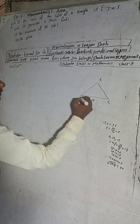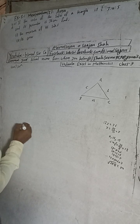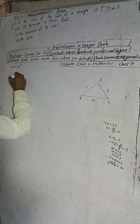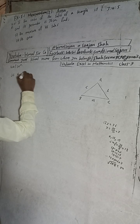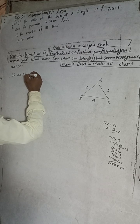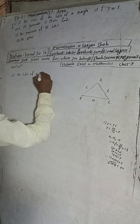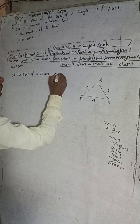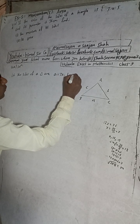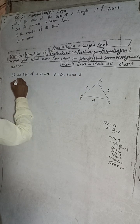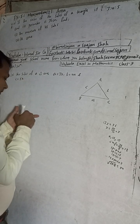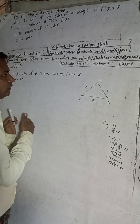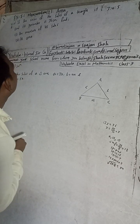Suppose this is a triangle with vertices A, B, and C, and the perimeter is given. Let the sides of the triangle be a = 3x, b = 4x, and c = 5x. If the sides are 3x, 4x, and 5x, the ratio will be 3:4:5 because x cancels out. The perimeter is also given as 36 cm.